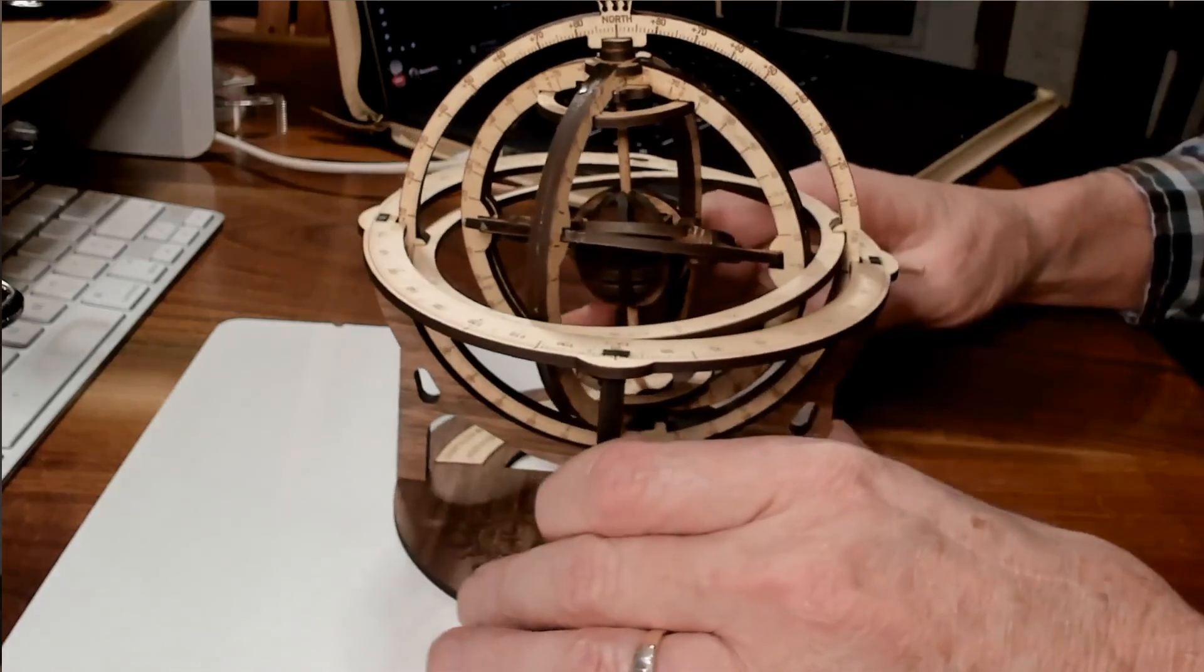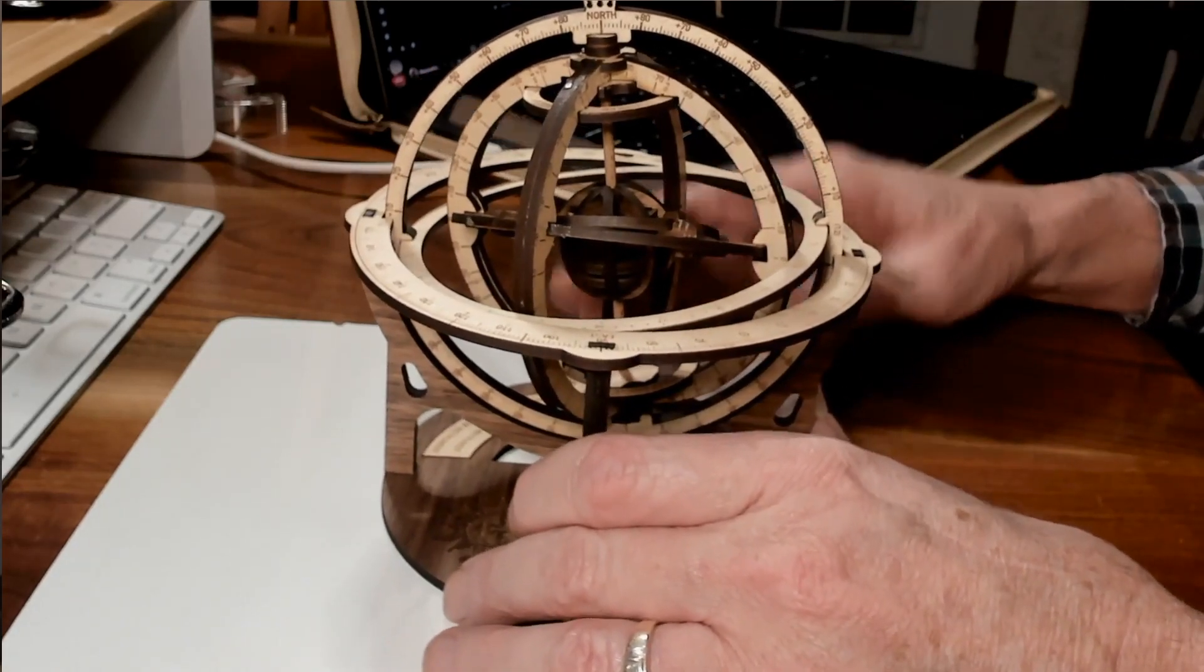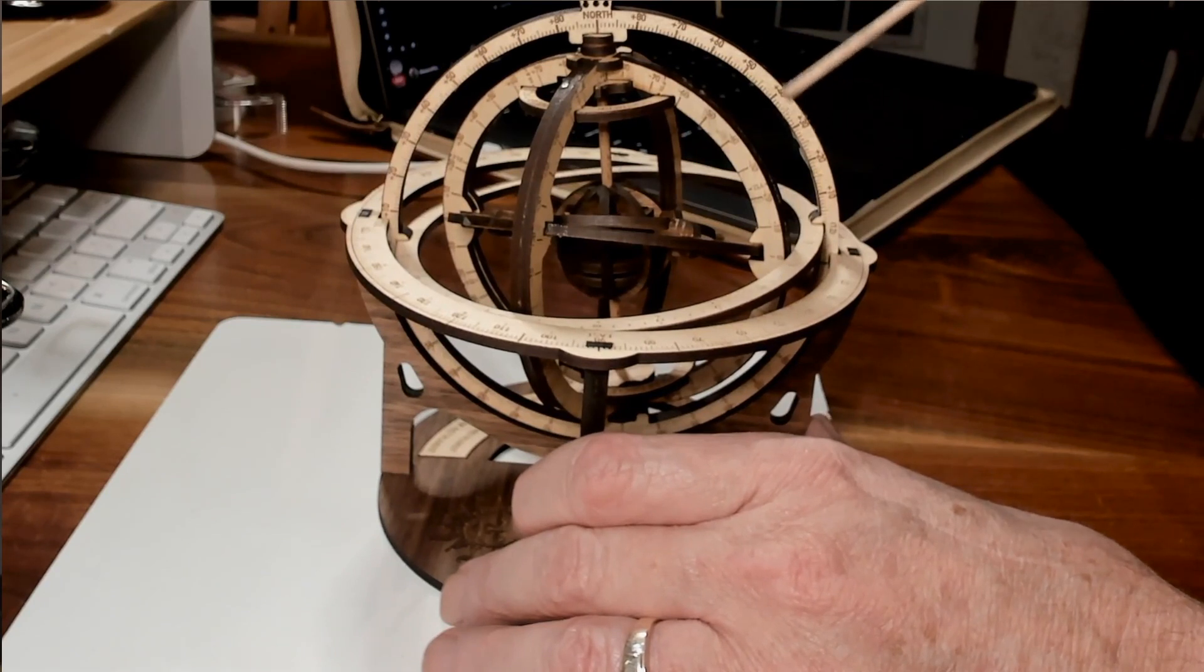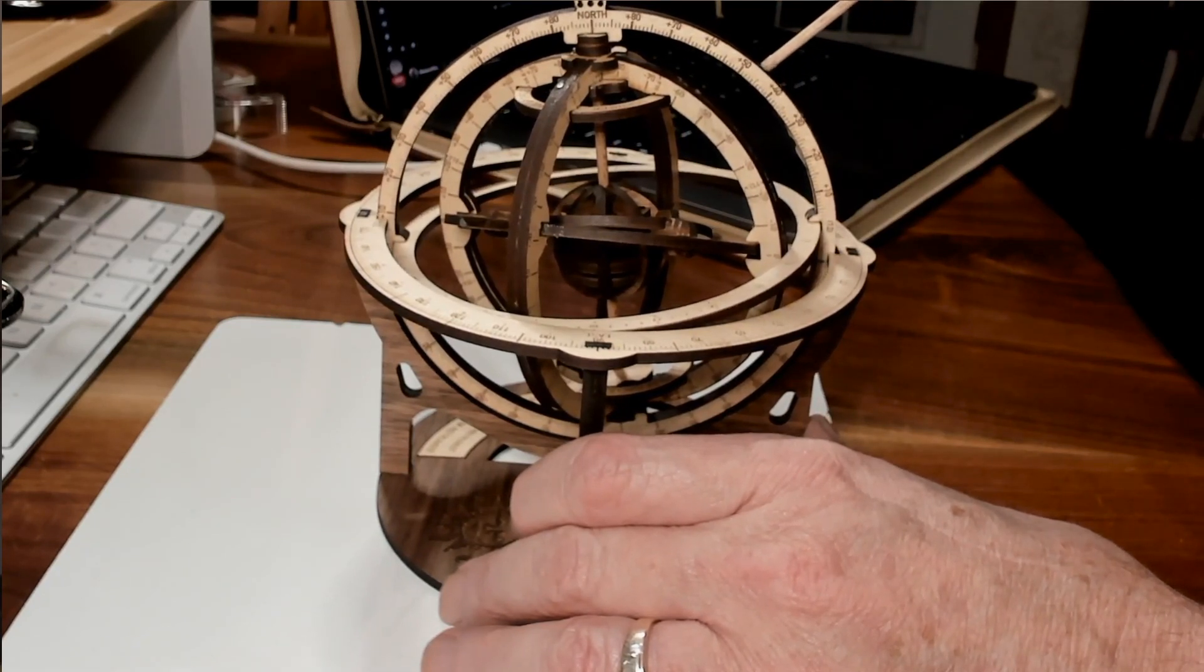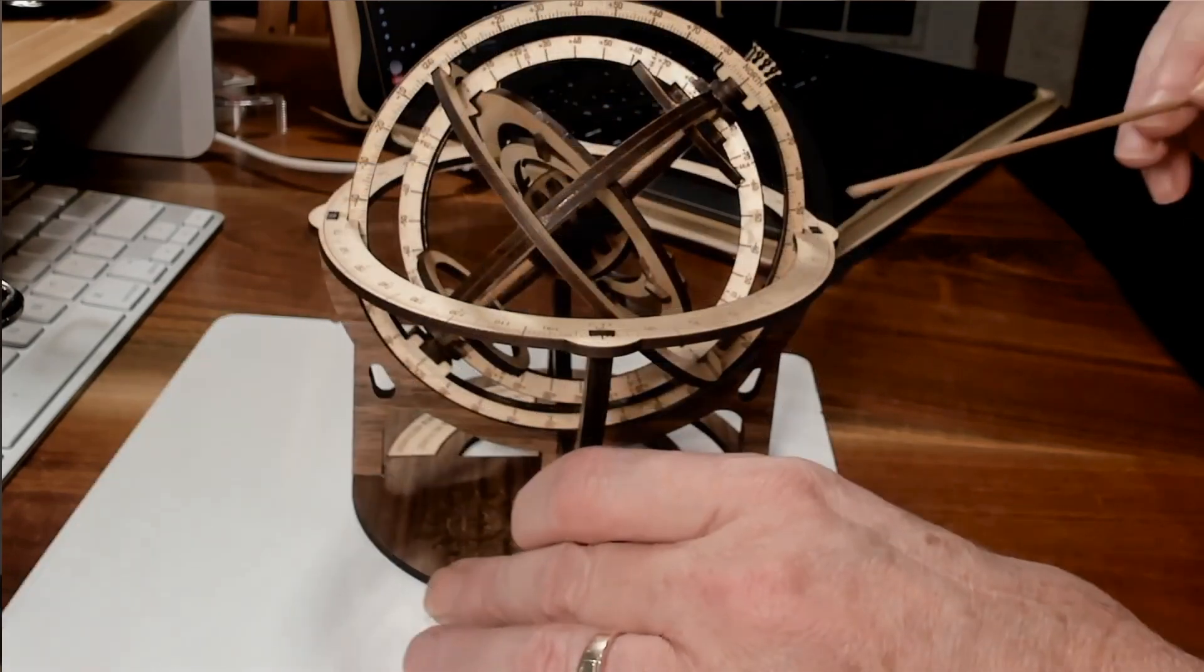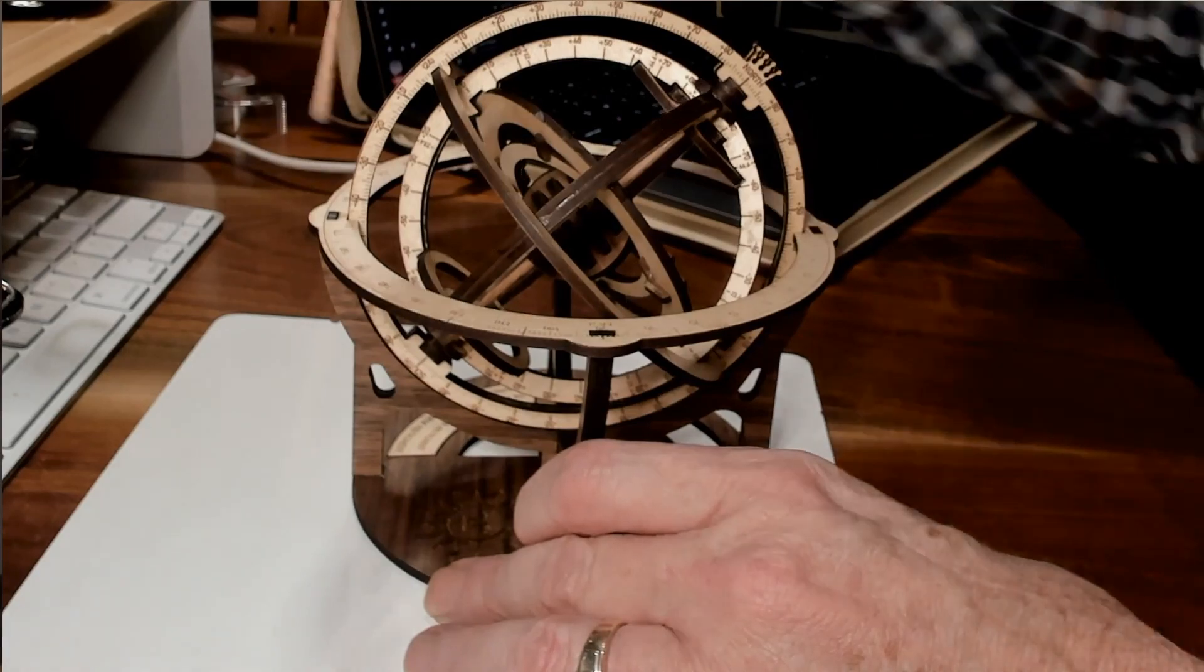Now to do the initial setup, what we need to do is find our latitude on the outer ring, or the meridian ring, of the armillary sphere. This is the meridian ring. So we'll tilt this to approximately 45 degrees.